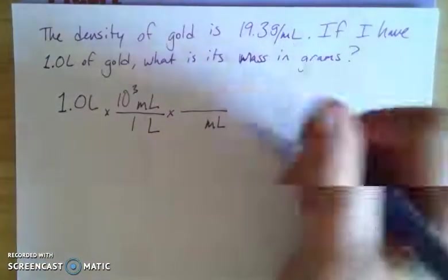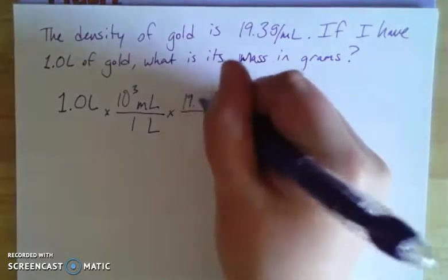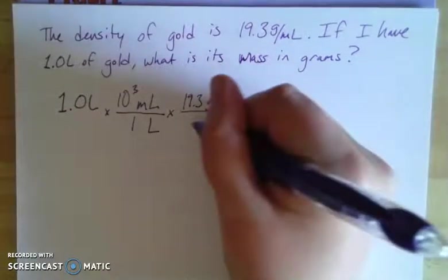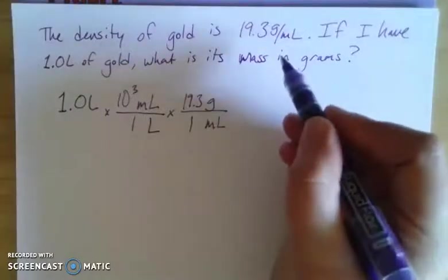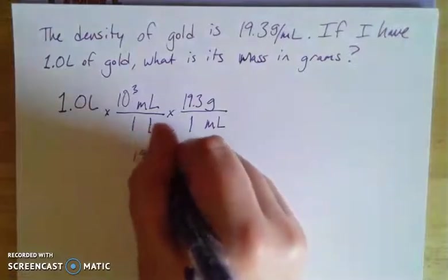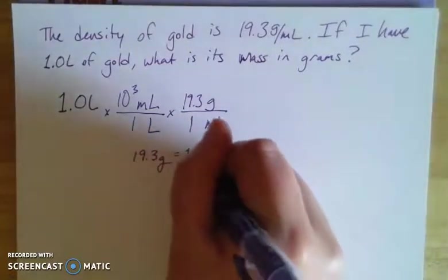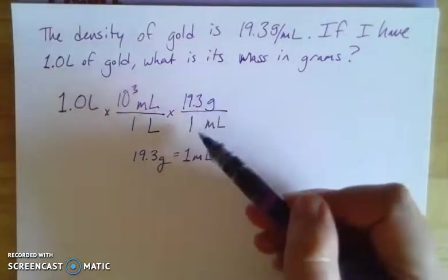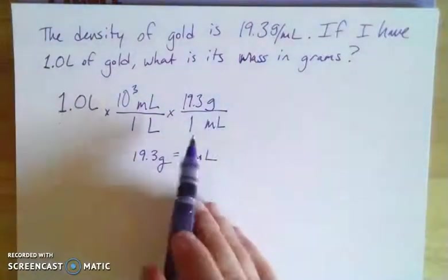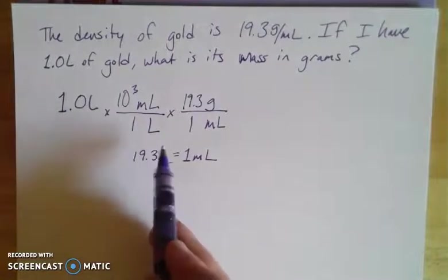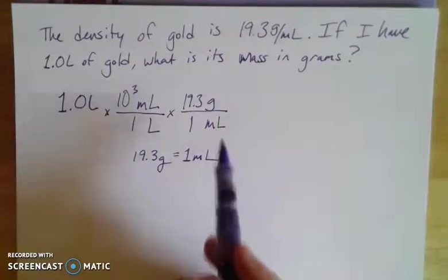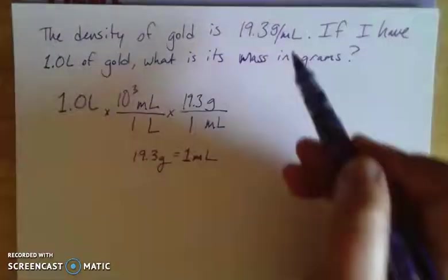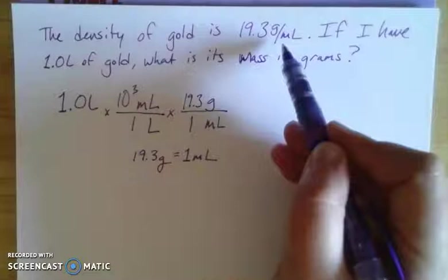I have grams on the top here - 19.3 grams for every one milliliter. This is an important piece about density. I apologize that my screen keeps cutting out and freezing, but density is 19.3 grams equals one milliliter. I like to think about it as an equality because these conversion factors have to be equal on the top and bottom - I'm essentially just multiplying everything by one, and that's how I can get away with converting units this way.